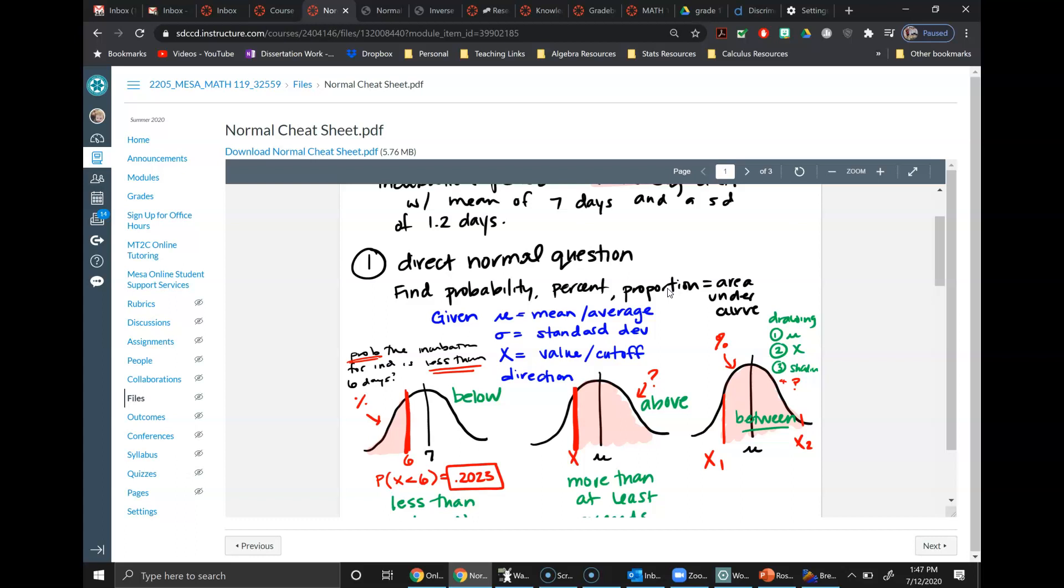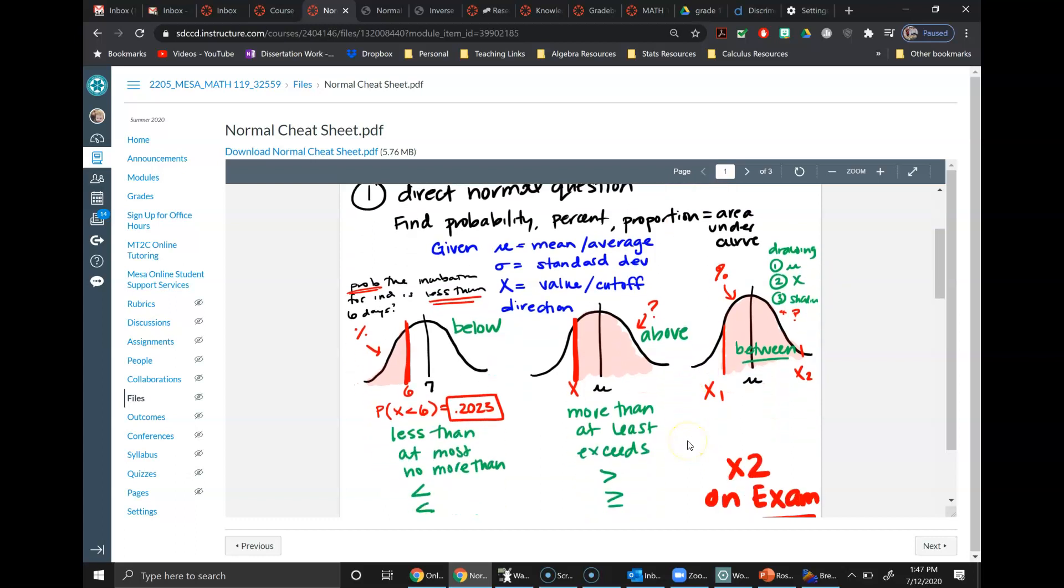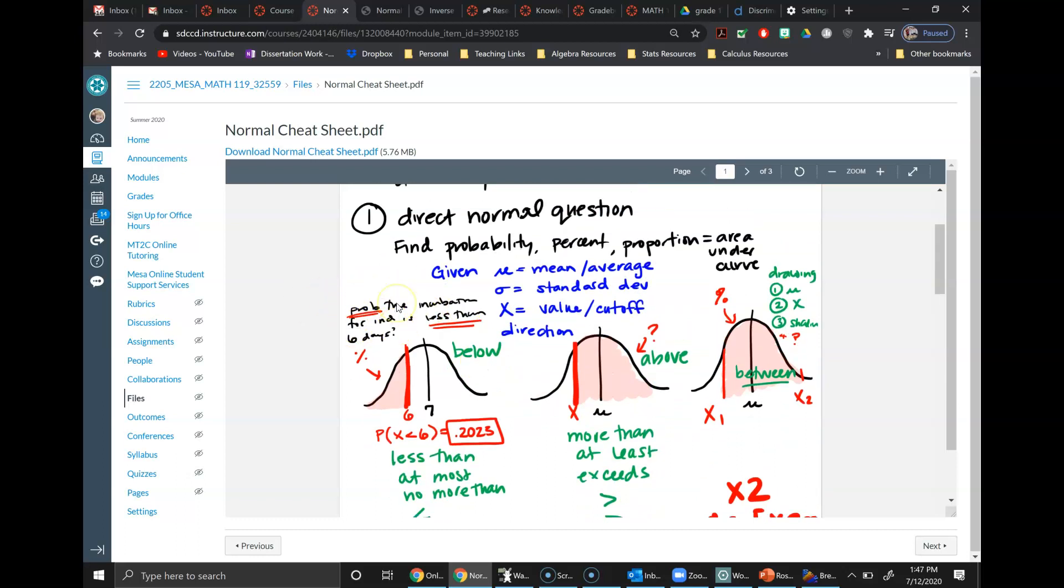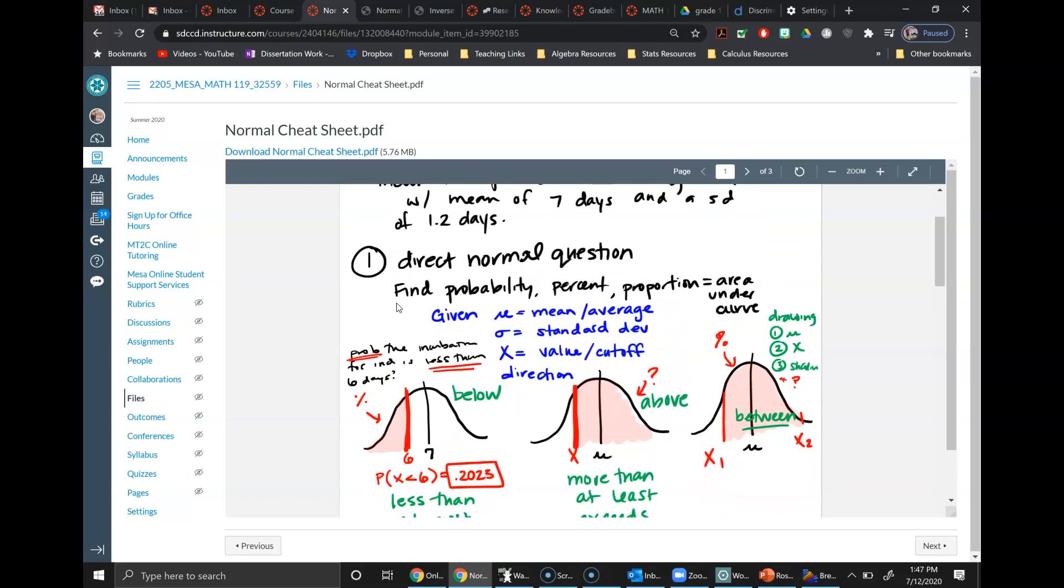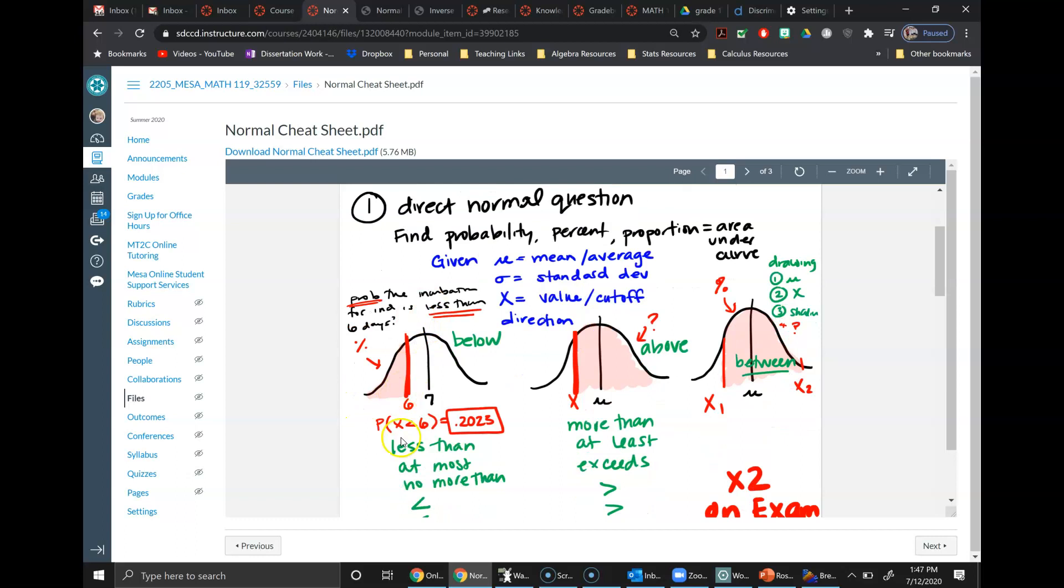So you can see here in all these situations, this one says the probability the incubation for, I have no idea what this is supposed to say, for an individual is less than six days. So six less would be the left side.